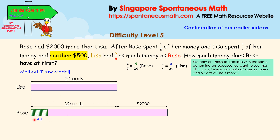Rose spent four units and one-fifth of that $2,000 which is $400. So Rose spent four units plus another $400. She had 16 units and another $1,600 left.